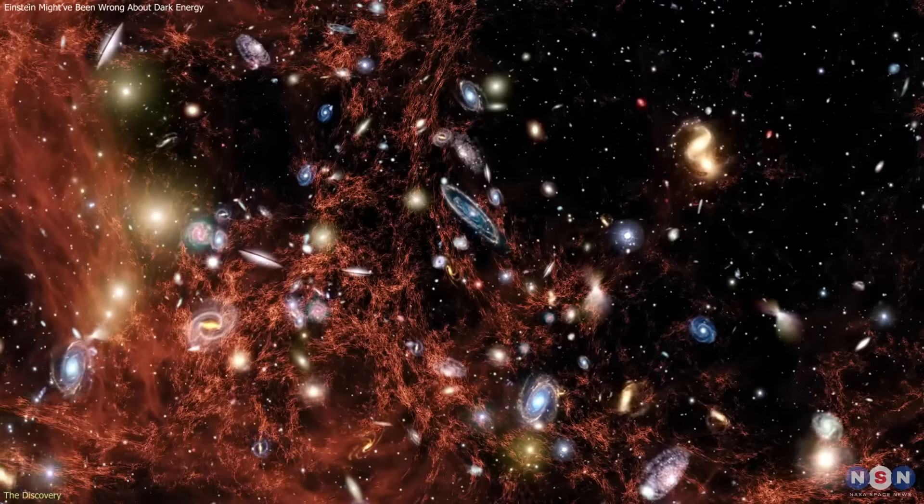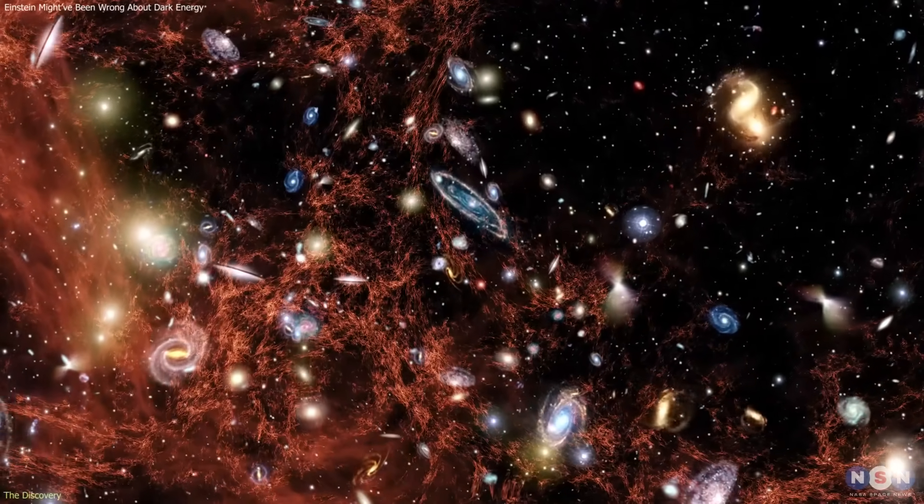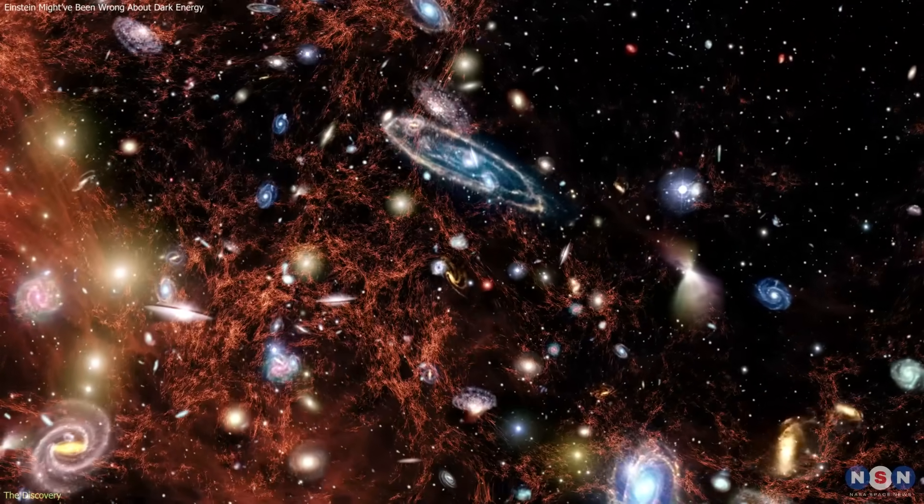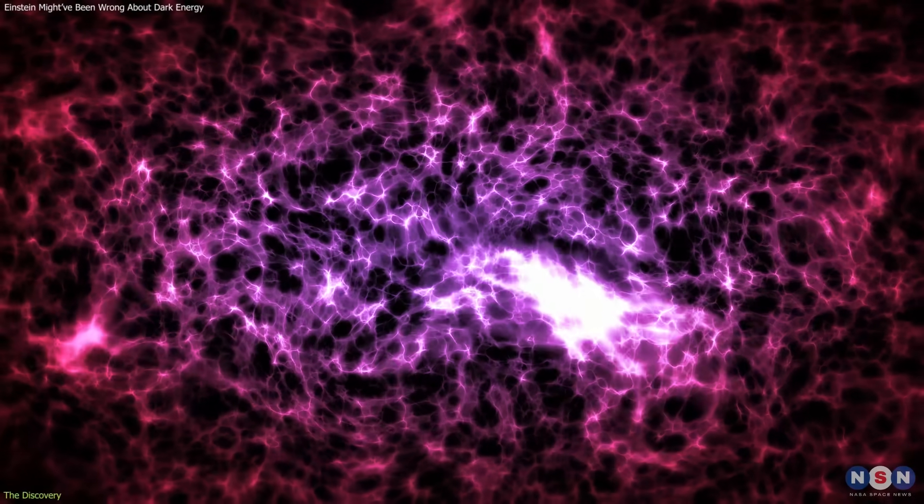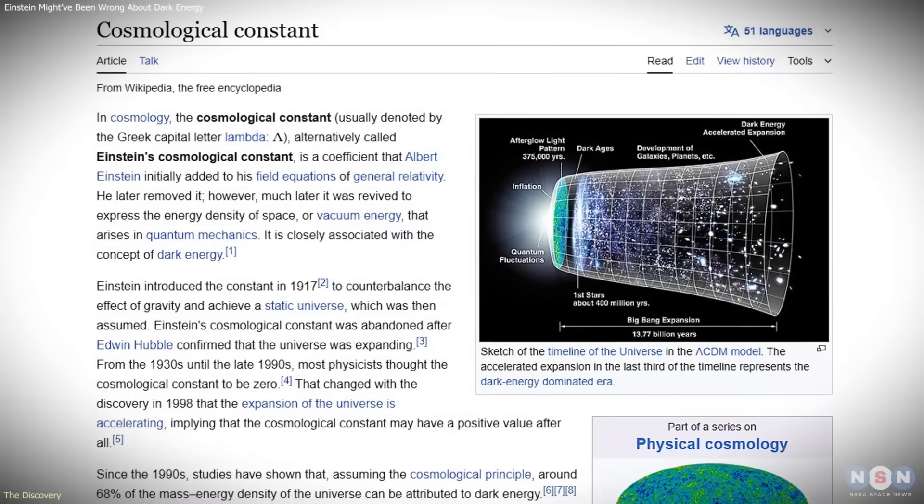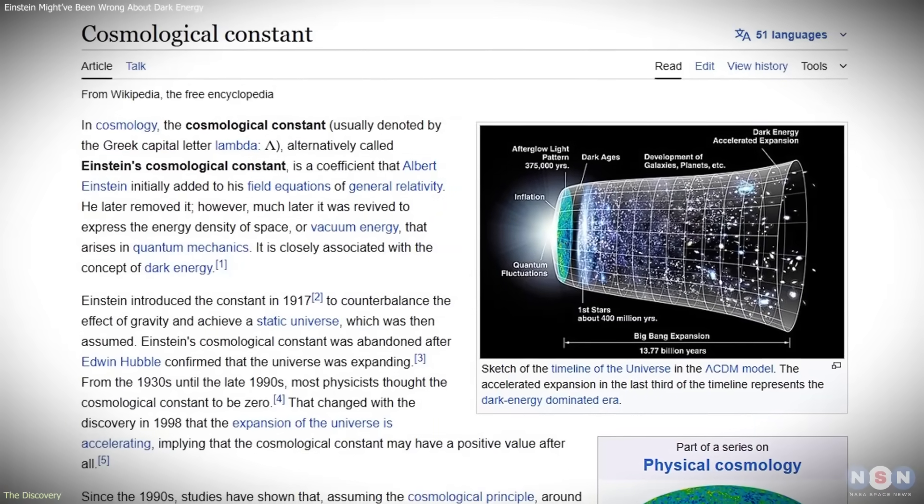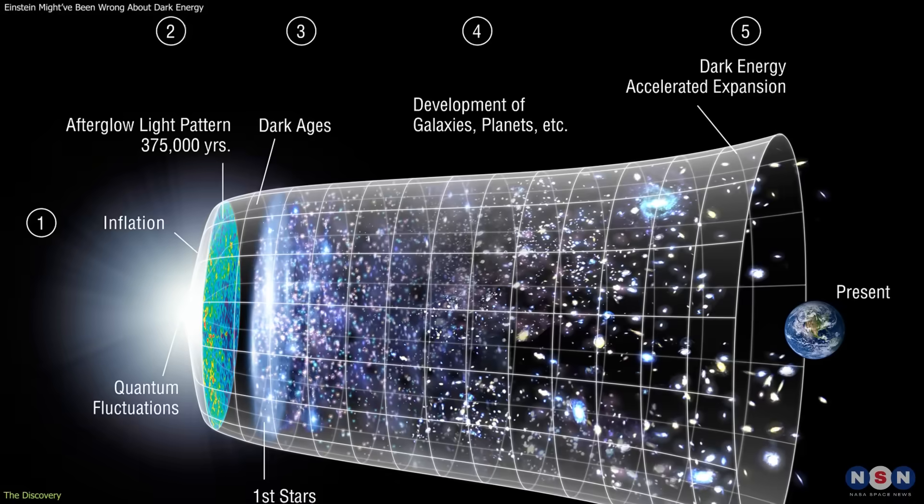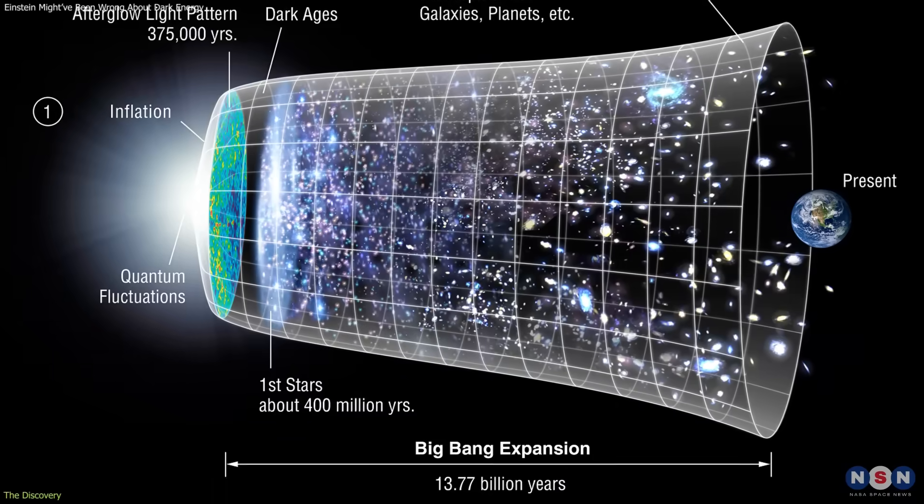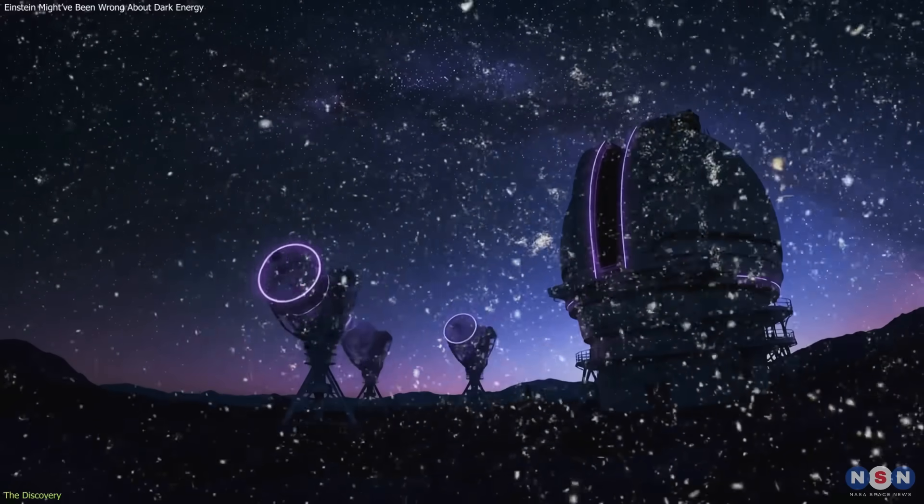For more than two decades, astronomers have worked with a simple but powerful assumption: that dark energy is constant, an intrinsic property of empty space that never changes. This cosmological constant, introduced by Einstein, has been the cornerstone of the Lambda CDM model, which explains most observations of the cosmos with remarkable accuracy. However...